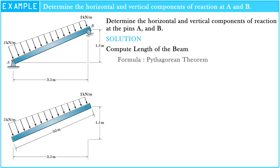Consider the formula of the Pythagorean theorem. The square of the length of the beam is equal to the square of 1.5 meters plus the square of 3.5 meters. So the length of the beam, which we consider as x, is equal to 3.8 meters.